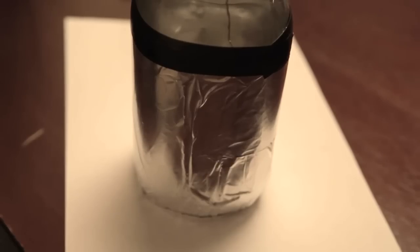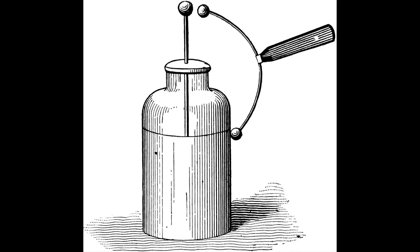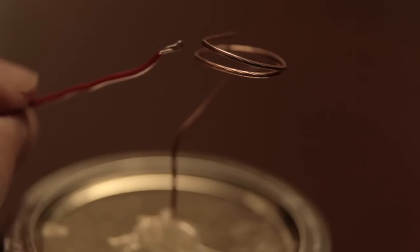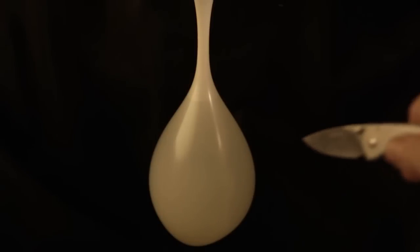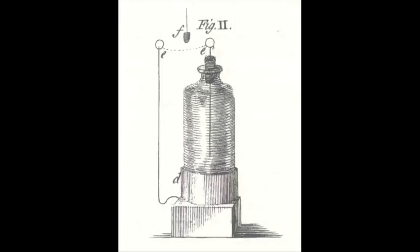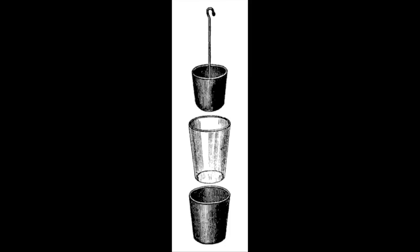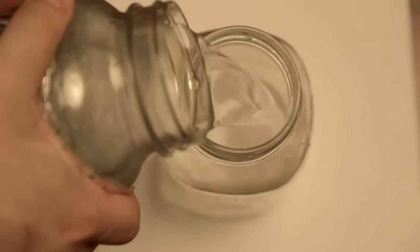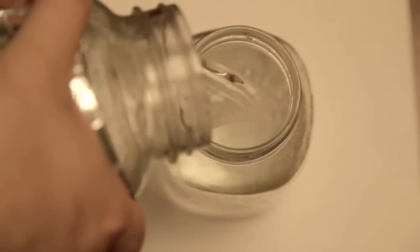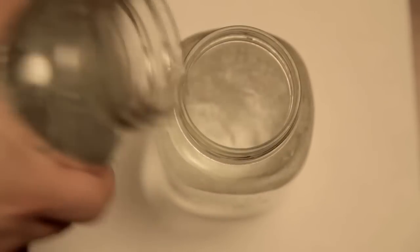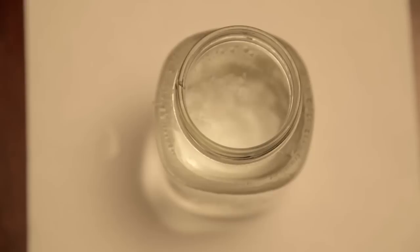To release the charge, he simply touched the outside conductor to the top probe. A large discharge occurred. Franklin improved the design over time, eventually realizing that the charge was not stored in the water, but the glass. The water was merely a conductive path from the probe to the jar. Today, we would call the Leyden jar a capacitor or charge storing device.